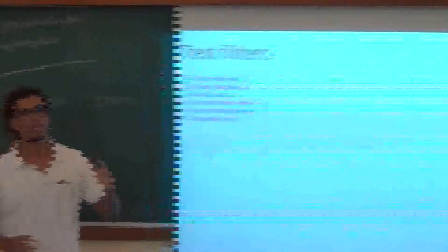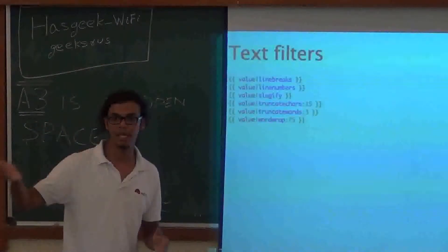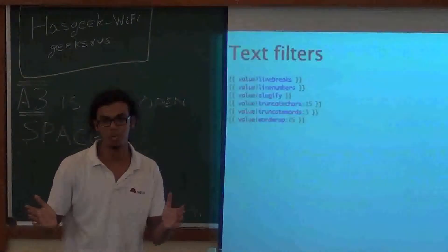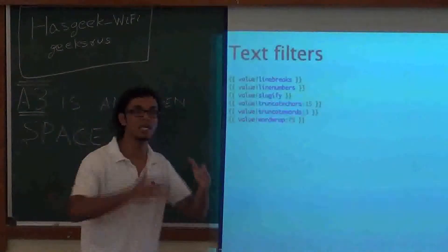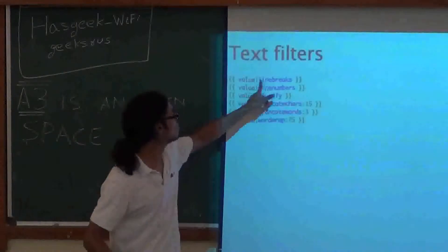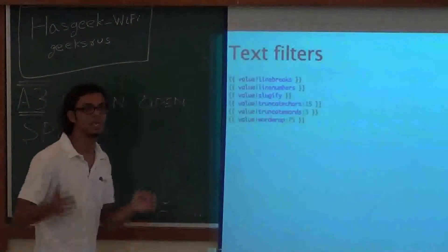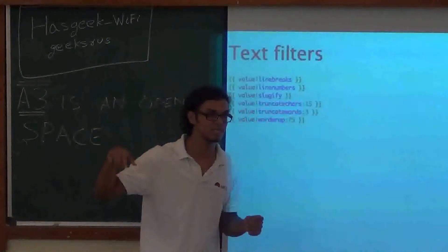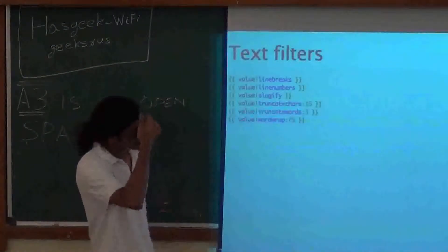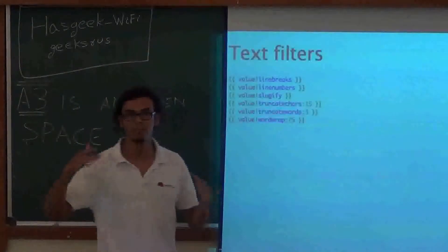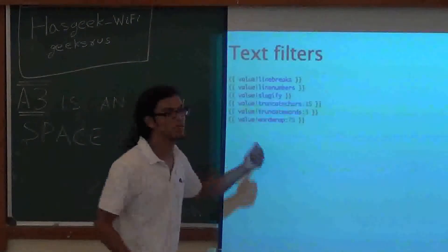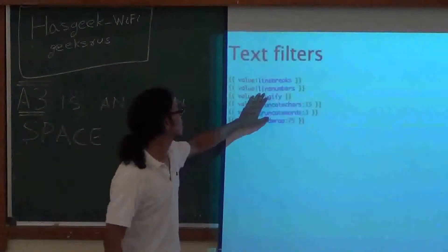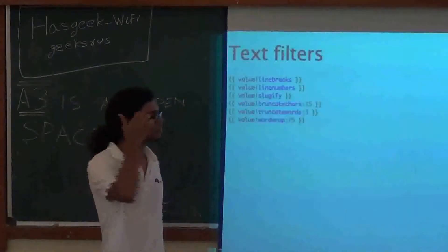There is another one called make list which makes it into a list. So these are really helpful when you are doing stuff. Text filters. What line breaks does is very interesting. So you have a paragraph, which has slash n as line breaks, and slash n slash n as a paragraph break. So that's the text. And when you just print it, you have to put it inside a pre-tag so that it maintains that structure. Otherwise it doesn't. So if you pass it through a line breaks filter, what it does is, it takes in all the slash n and puts a BR slash. So it makes a line break.